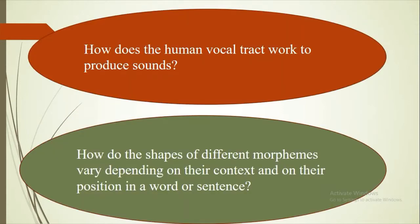I am going to give you two important questions so you can easily understand this lecture. First one is: how does the human vocal tract work to produce sounds? So production of sounds and the work of the vocal tract or vocal organ is studied under phonetics or phonology — you have to discover this after listening to this lecture. Second question is: how do the shapes of different morphemes vary depending on their context and on their position in a word or sentence? So the position of different morphemes depending on the context is studied under phonetics or phonology — you have to analyze and discover. Obviously you will have the answer after understanding and watching this lecture.